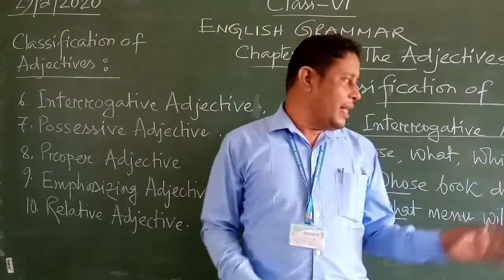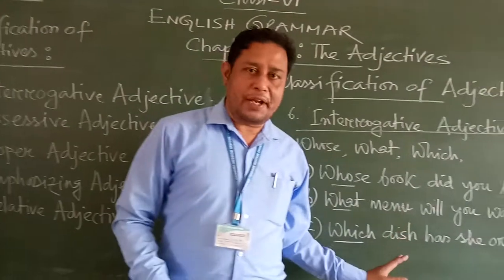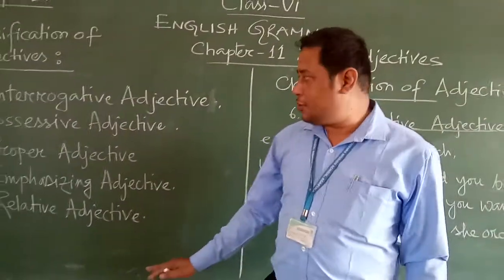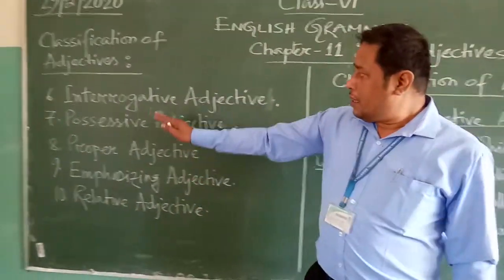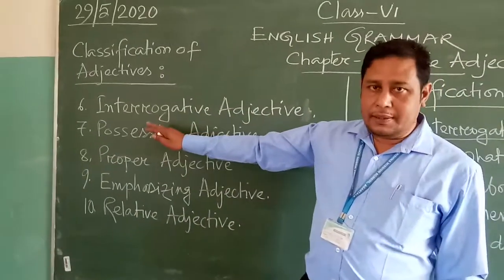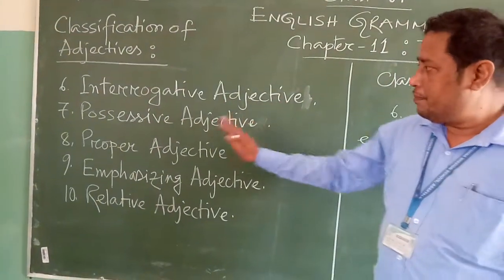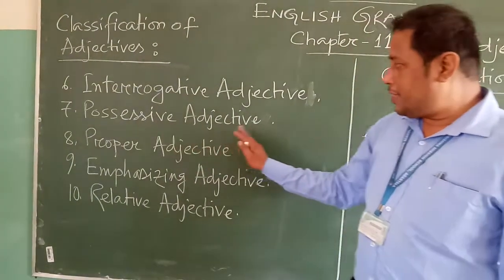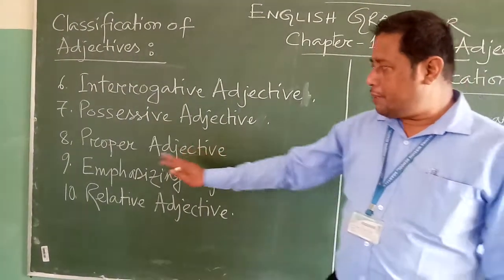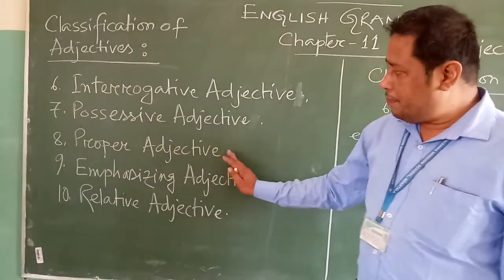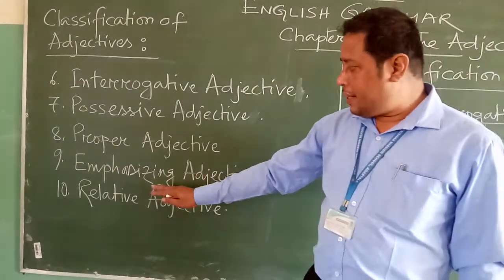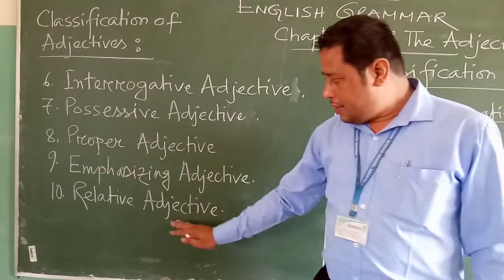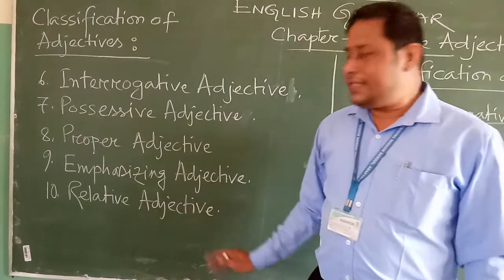Today I will explain the next five points of adjectives given here in the list. Number 6: interrogative adjective. Number 7: possessive adjective. Number 8: proper adjective. Number 9: emphasizing adjective. And number 10: relative adjective.